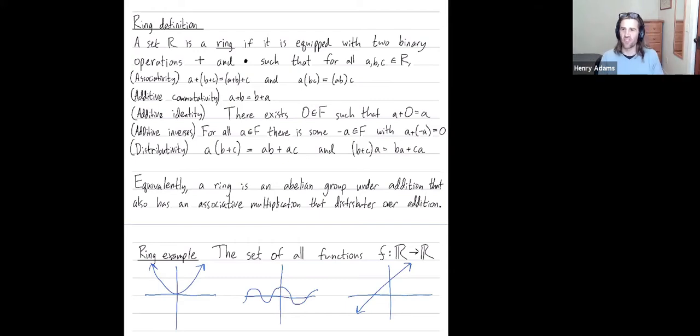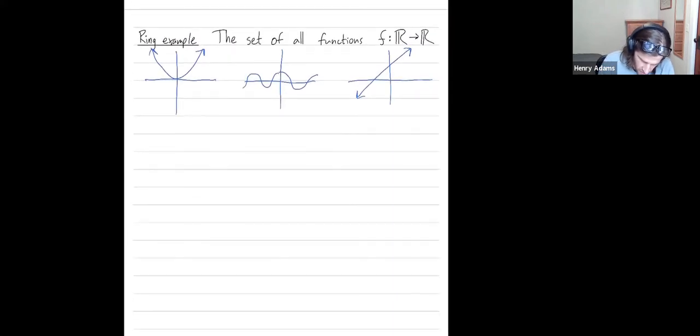The functions I've drawn have all happened to be continuous, but you could think of functions that are not continuous. Your function could be a step function, which is negative one for a while, and then it's equal to one for a while.